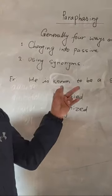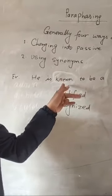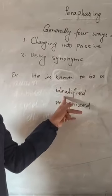For example, it is known to be a strange person. Known is the main verb. In the place of known, I use identified or recognized.